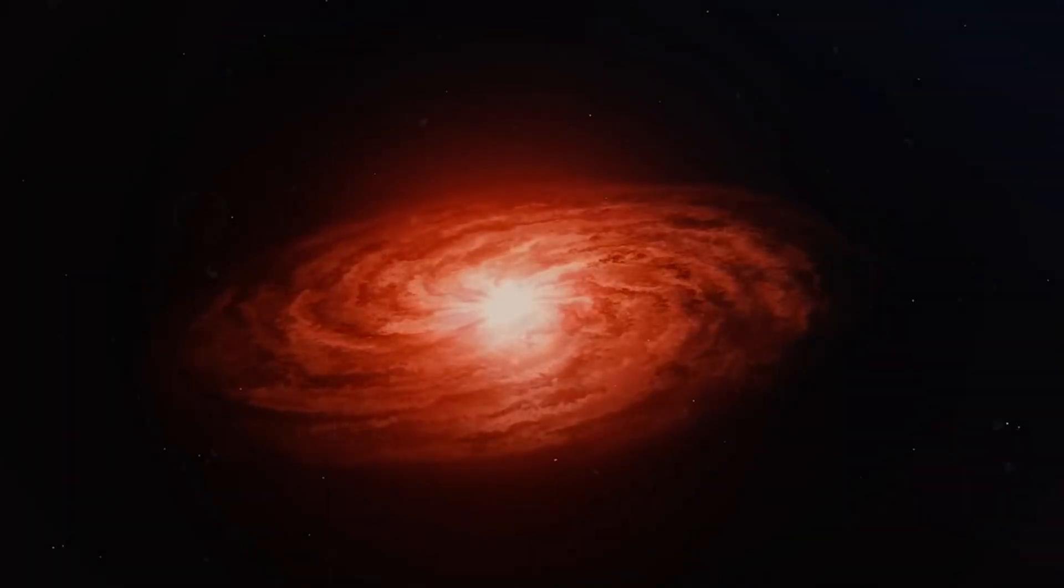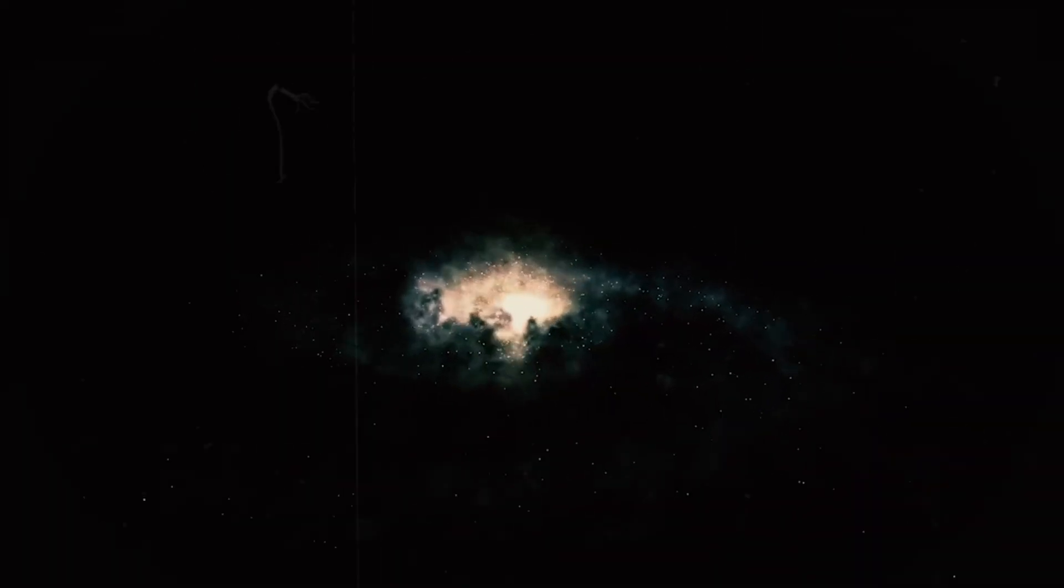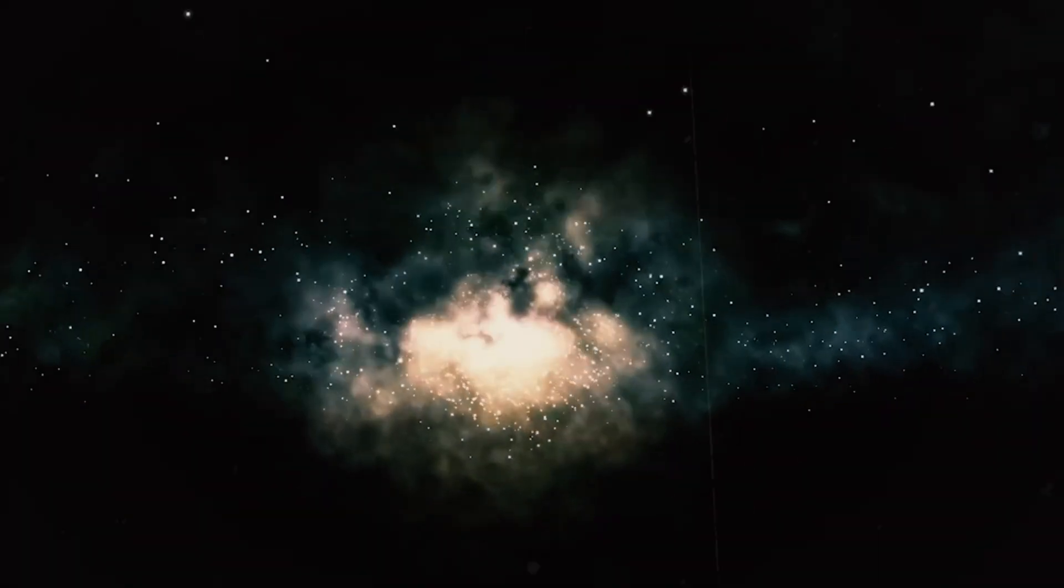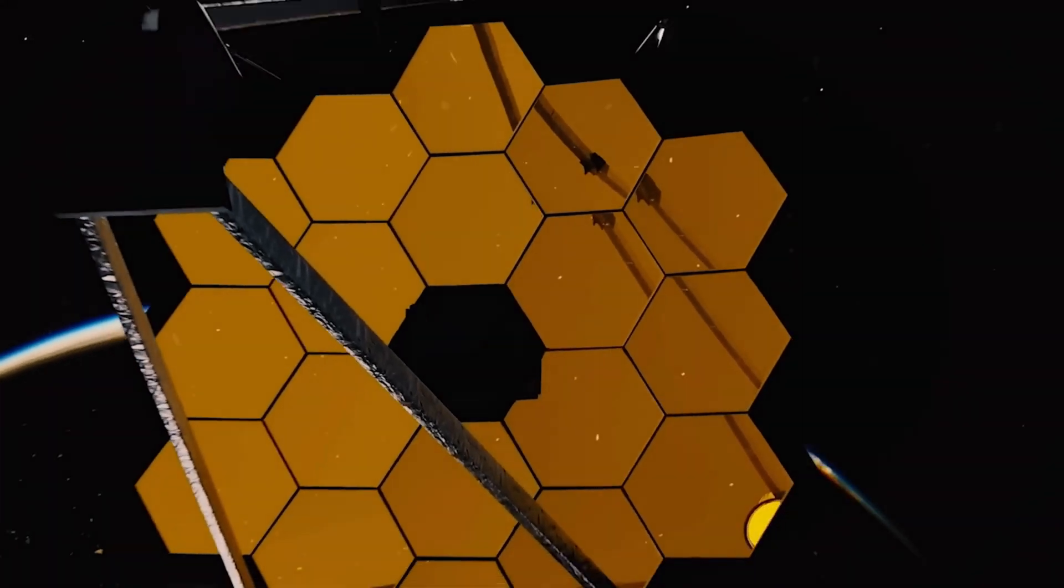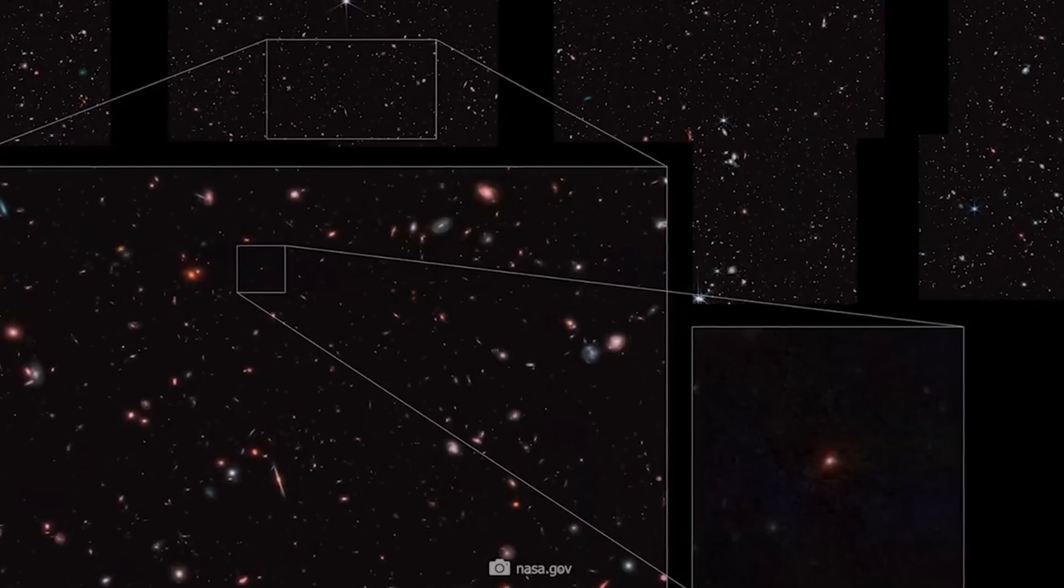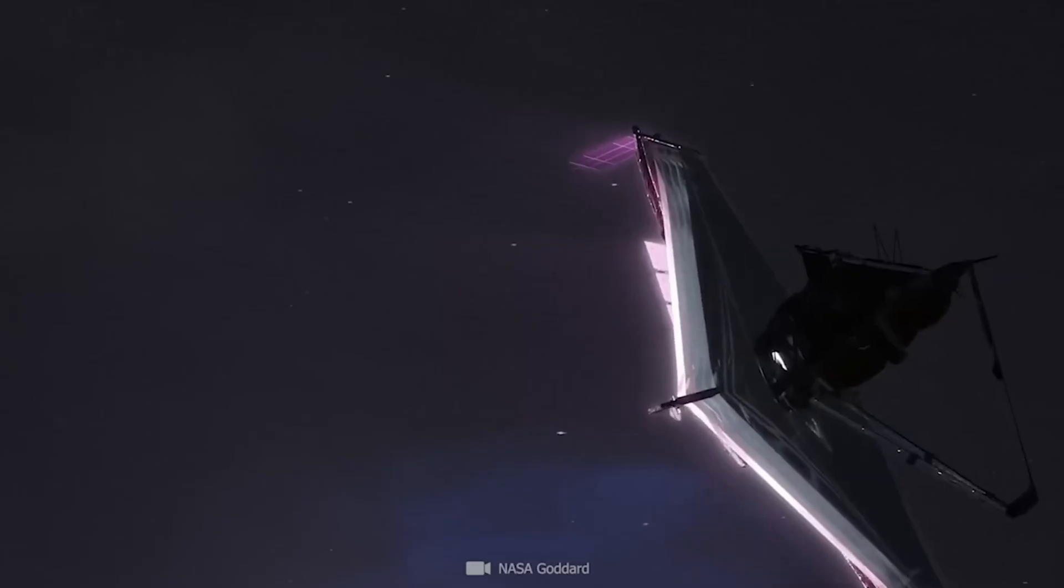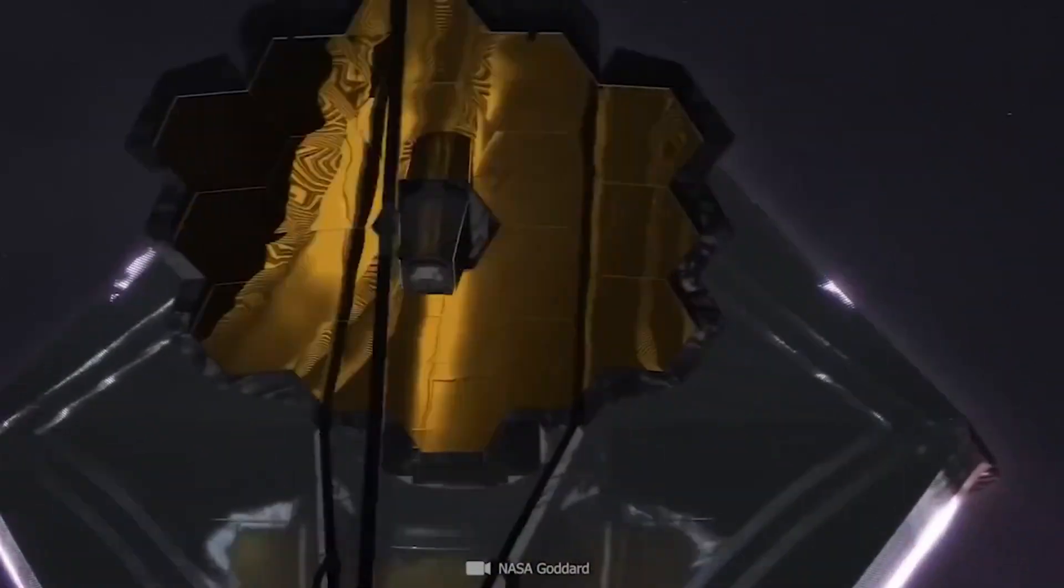Indeed, Ceers 2112 is viewed at a redshift of 3, indicating that the light from this galaxy took almost 12 billion years to reach the Webb Telescope. This finding is unexpected, as galactic bars observed in the galaxy were thought to have developed around 4 billion years after the universe came into being.